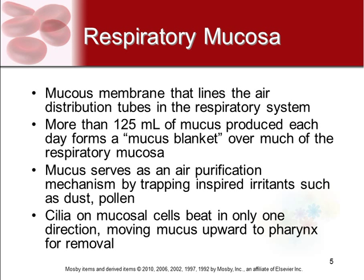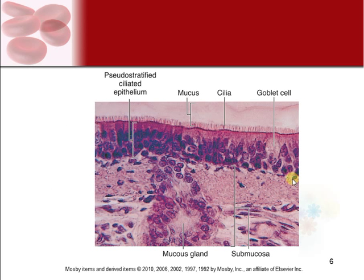You also have cilia on your mucus cells. Cilia are little finger-like projections that beat upward in one direction to help keep mucus moving up towards the pharynx so you can cough or sneeze it out — expelling those trapped irritants from your body. You can see the tissue here: there's a nice thick mucus layer, and these little cilia, those little fingers sticking out, beat in one direction to try to expel all the mucus containing the irritants.